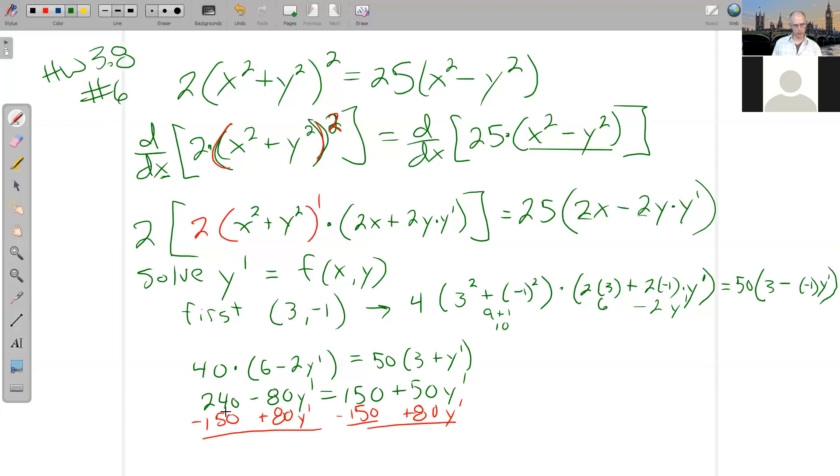What is the net result? 90 is equal to, 8 and 5 on a good day is 13, so that's 130 y prime. So y prime is equal to 90 over 130, or 9 thirteenths.